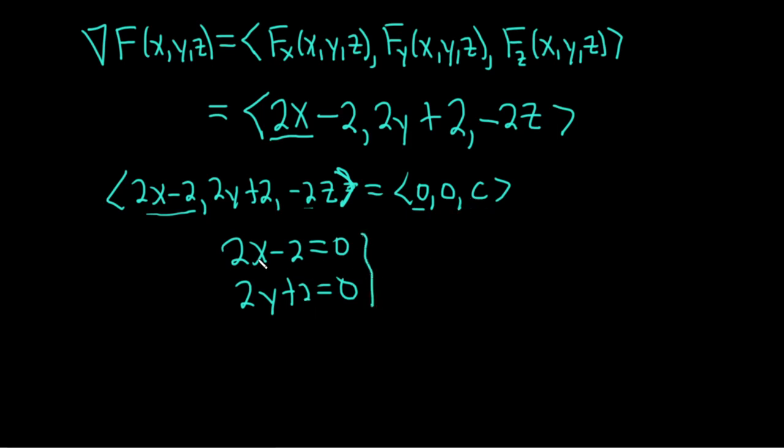Negative 2z equals c could be helpful, but we're not going to need it. So from here, we see that 2x is equal to 2, so x is equal to 1. Super easy. 2y is equal to negative 2, so y is equal to negative 1.